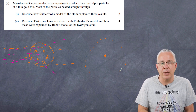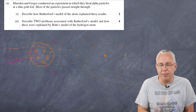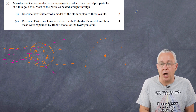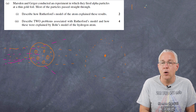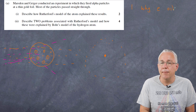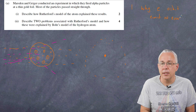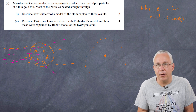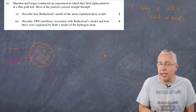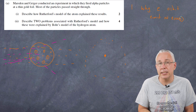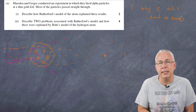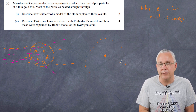That description — covering what came before and what Rutherford's model now proposed, with some detail of the experimental setup linked to the model he devised — gives you the two marks. The second part of the question asks us to describe two problems associated with Rutherford's model and how they were explained by Bohr's model of the hydrogen atom. The first problem is: why do electrons stay in orbit but emit no energy?